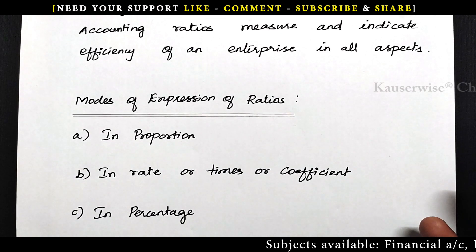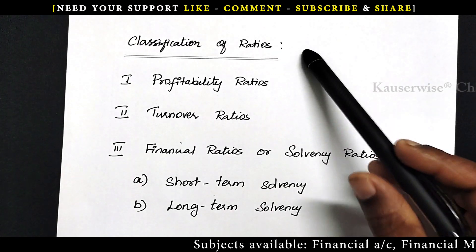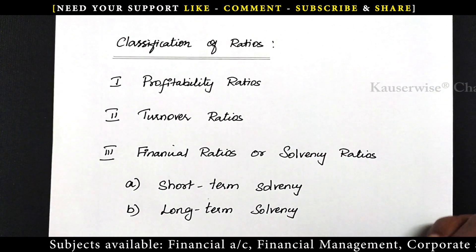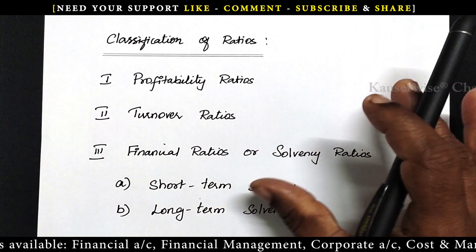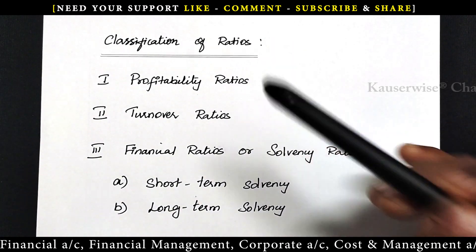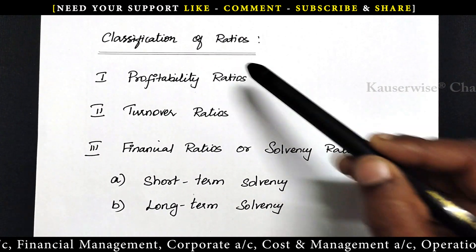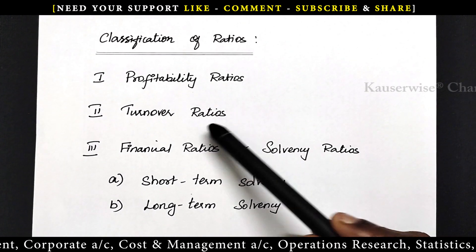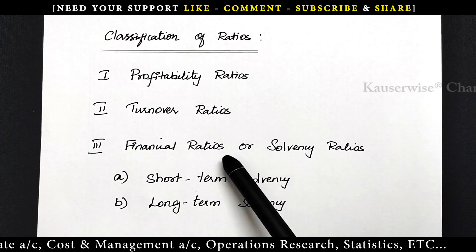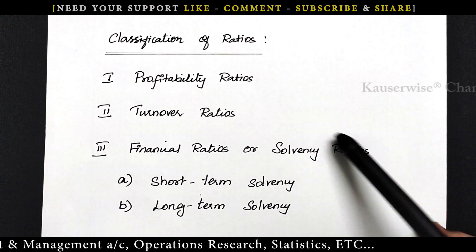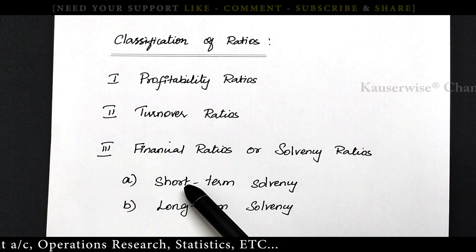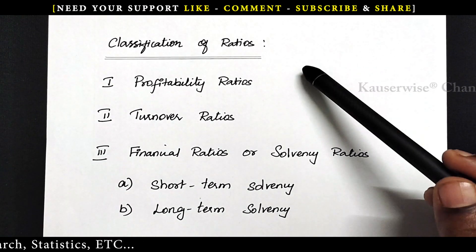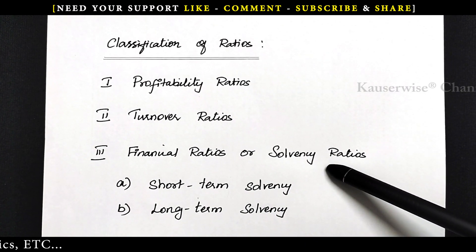Now let us see the different classifications of ratio analysis. Ratios are classified in several ways — different approaches are used for classifying ratios. Here I have classified ratios based on functions and purpose. Based on purpose and functions, ratios are classified into three categories: the first is profitability ratios, the second is turnover ratios, and the third is financial ratios or solvency ratios. Solvency ratios are again classified into two categories: short-term solvency and long-term solvency.